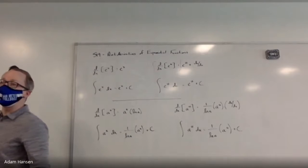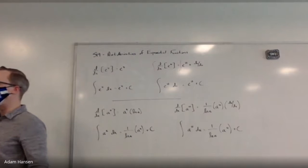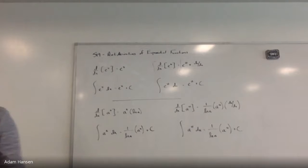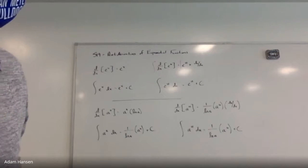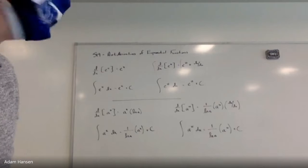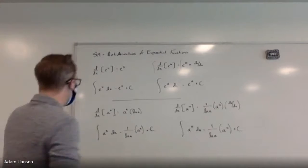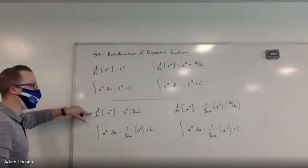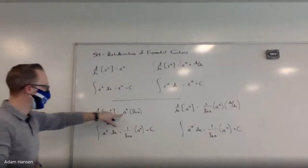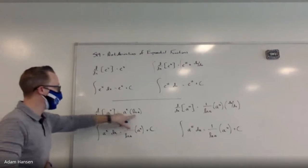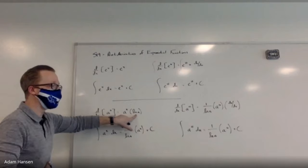Instead of e to the x, what if I have a different base — like three to the x, or five to the x, or ten to the x? How do you take the anti-derivative of exponential functions not in base e? Let's relate this back to the derivatives we did in first semester. We've proven that the derivative of a to the x is a to the x times the natural log of a.